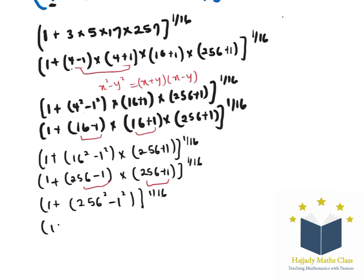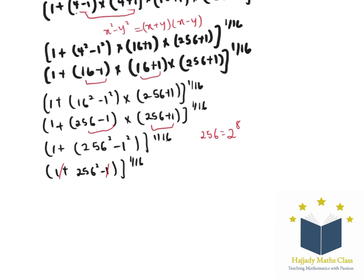Here I'm going to have 1 plus — take note of something — 256 is the same thing as 2 to the power of 8. So multiplying 2 eight times is going to give 256. Here I'm having 256 squared minus 1, all to the power of 1 over 16. This cancels out, and finally I'm going to have 256, which is the same thing as 2 to the power of 8, squared. So here I'm going to have 2 to the power of 8 multiplied by 1 over 8, giving us the final answer.